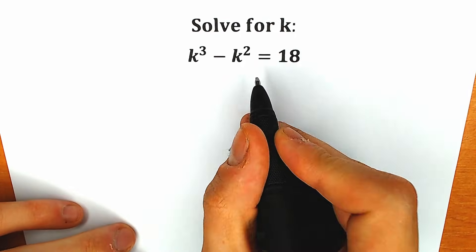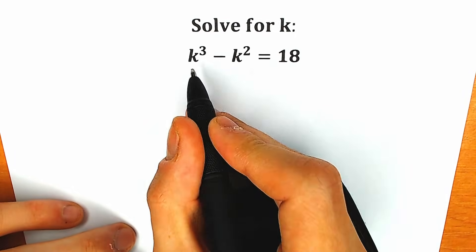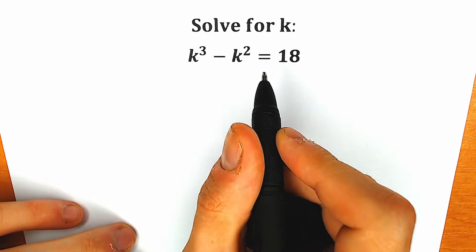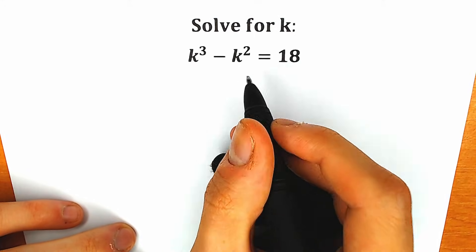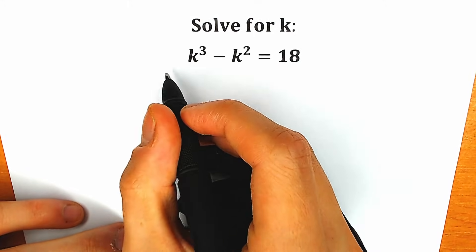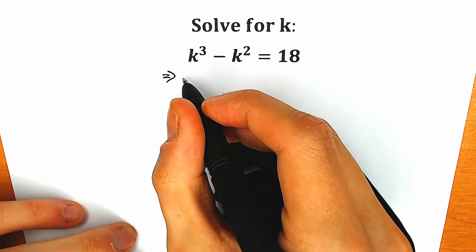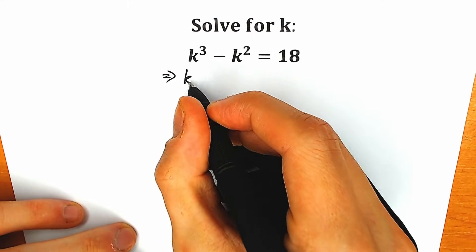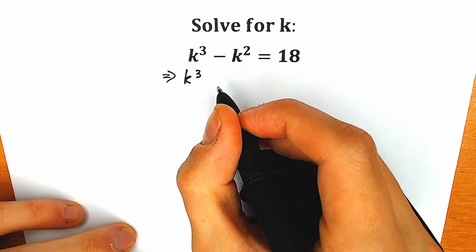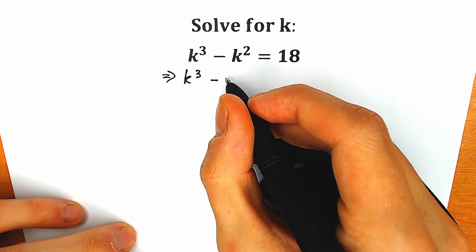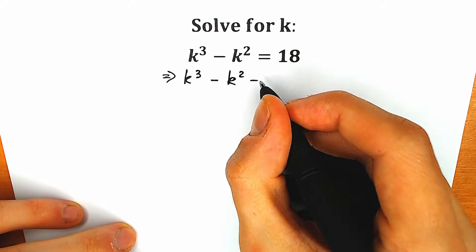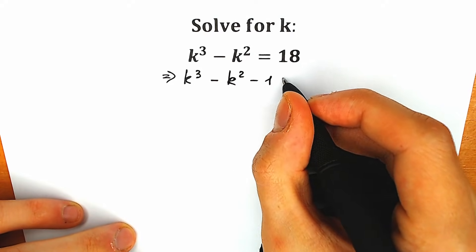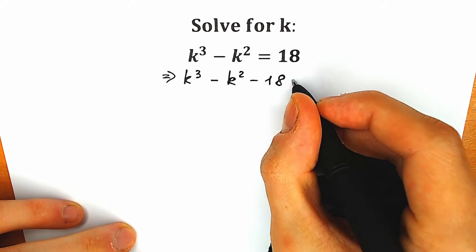First of all, I just want to rewrite this question in a different order. I want to write this 18 on the left side, of course with the negative sign. So we have k cubed minus k squared minus 18 equal to 0.